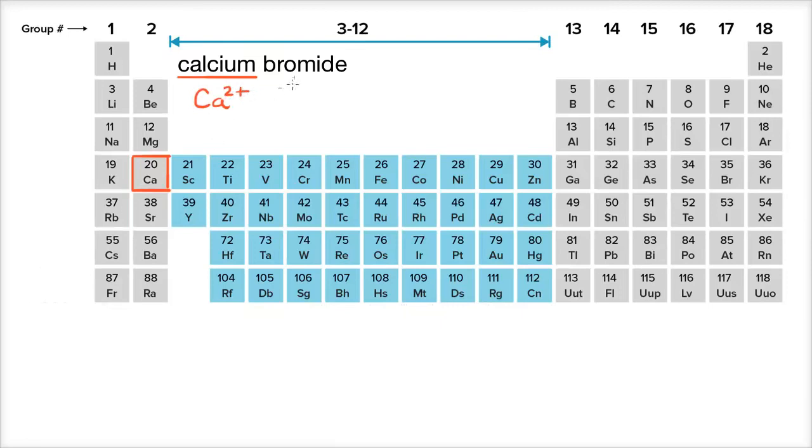Now, let's look at the bromide part. The -ide tells us that this is going to be a negative ion, or it's going to be an anion.